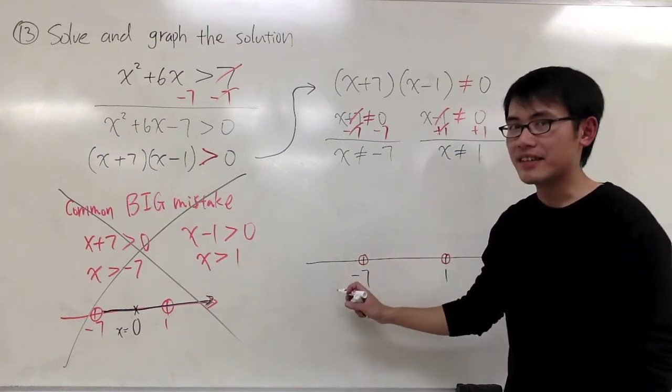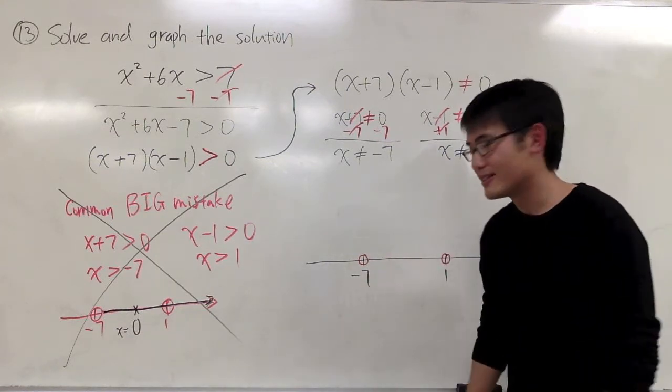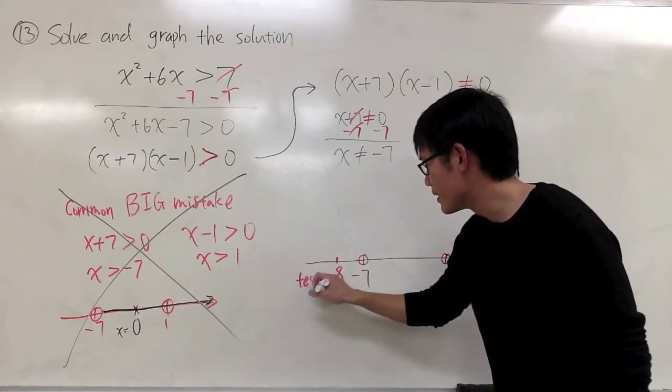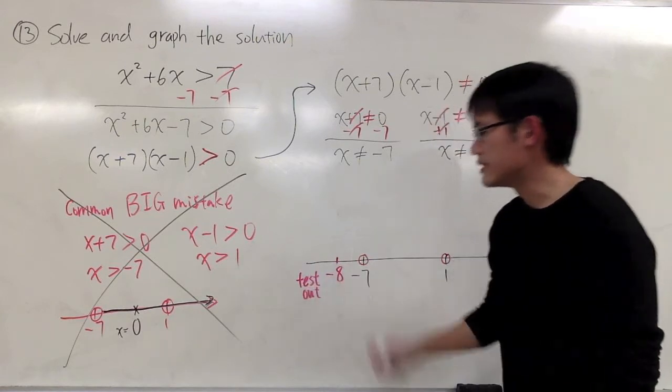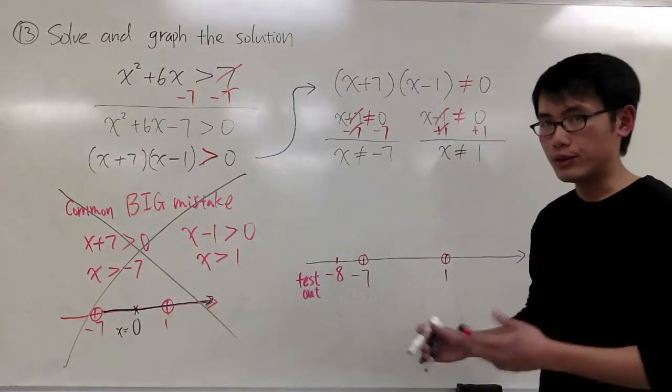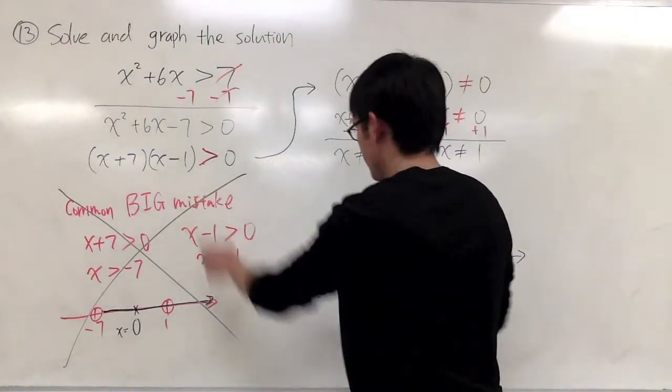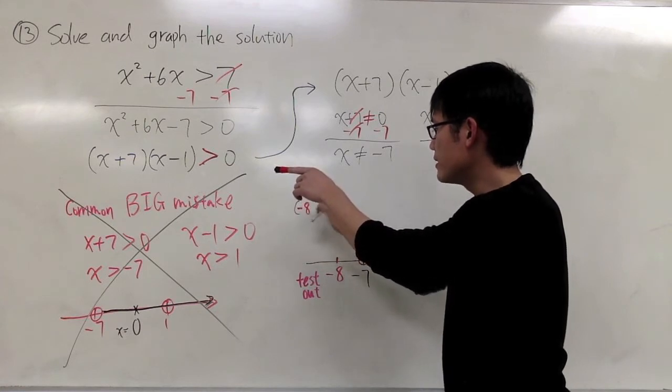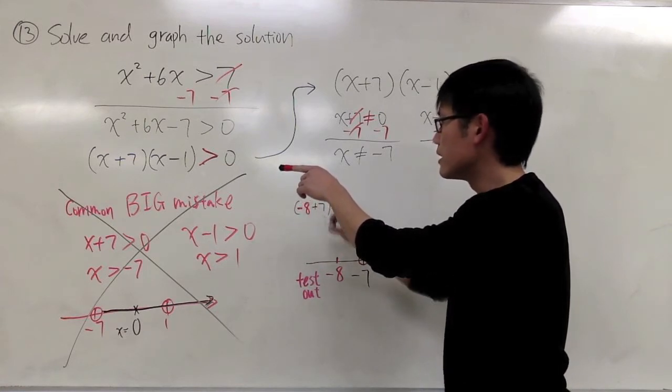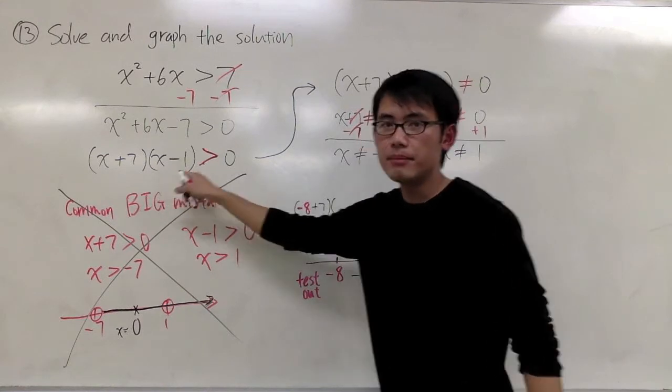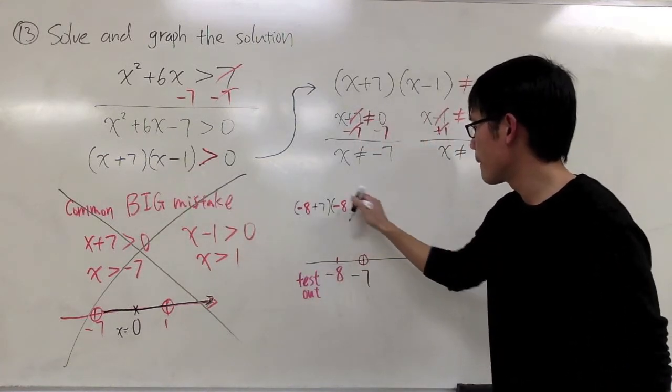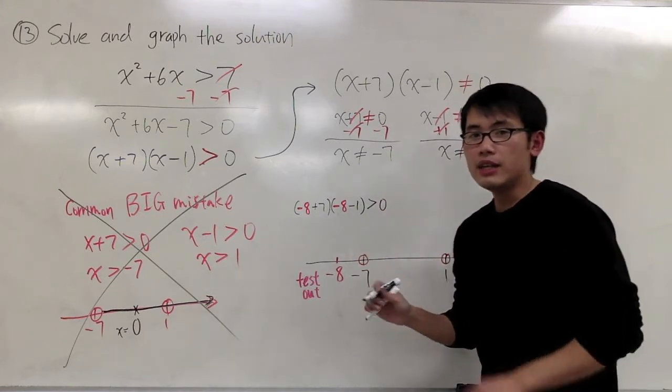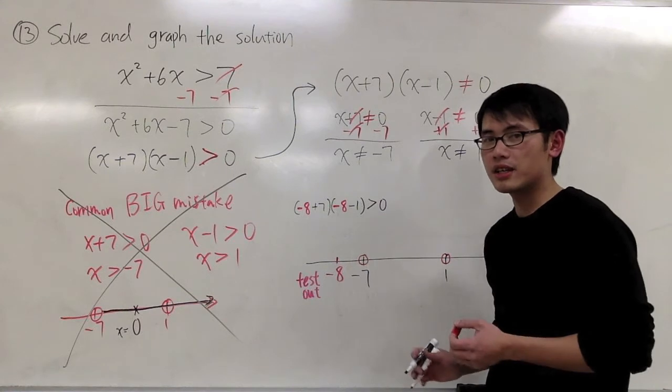Think about a number that's less than negative 7, and I bet you said negative 8. We are going to test out x is equal to negative 8. To do that, plug in negative 8 in here. This is just my test. I will get negative 8 plus 7 times negative 8 minus 1. Do I get greater than 0? You don't need to work on the actual computation. All we care about is either it's positive or negative.